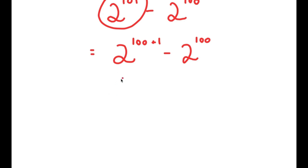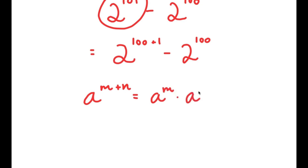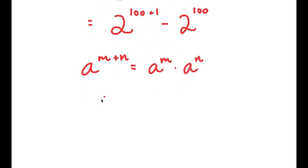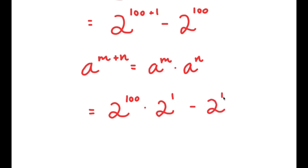The reason I did that is because now I can use this property that states that a to the power of m plus n is equal to a to the power of m times a to the power of n. So 2 to the power of 100 plus 1 is going to equal 2 to the power of 100 times 2 to the power of 1, and now I have this minus 2 to the power of 100.